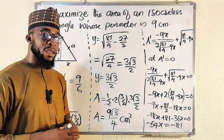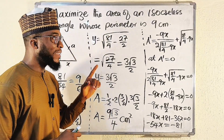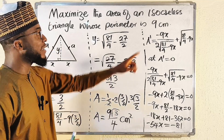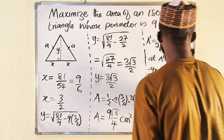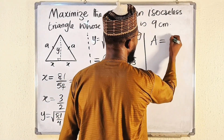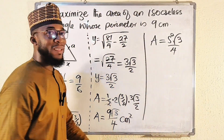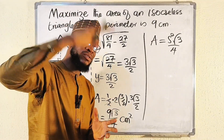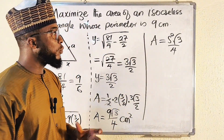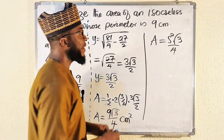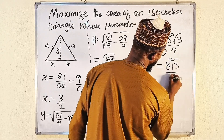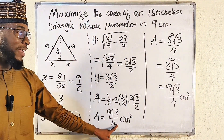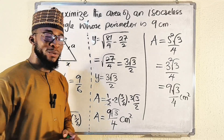Here's a shortcut: if you have two or more isosceles triangles of equal perimeters, the one with the greatest area is the equilateral triangle — when all sides are equal. The area of an equilateral triangle is (s²√3)/4. With perimeter 9, each side s = 9/3 = 3. So area = (3²√3)/4 = 9√3/4 cm² — exactly the same answer!